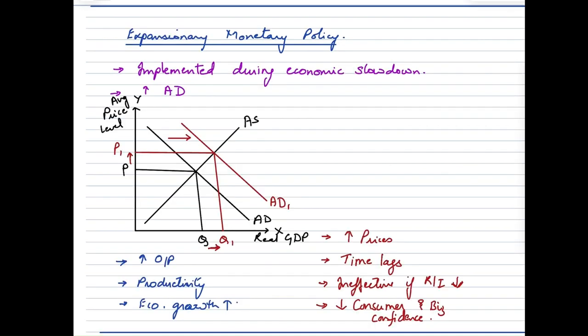Now let us take a look at an expansionary monetary policy. So an expansionary monetary policy is implemented during an economic slowdown or more specifically during a recessionary time phase. The main agenda here is to increase the aggregate demand. So once the expansionary policy is implemented, this is how the aggregate demand would be impacted.